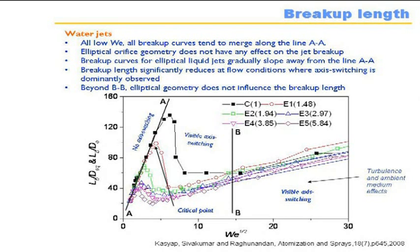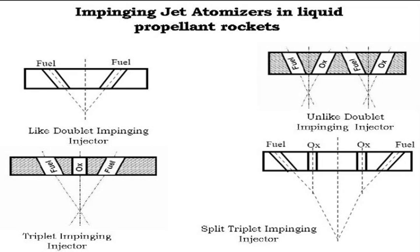In rocket propulsion — another aerospace device — impinging jets are very common in liquid propellant rockets. You have a variety of impinging jets: depending on the type of application, you may have what is called a doublet, a like doublet, an unlike doublet, triplets, or split triplets. All of them exist in practice in different applications. We are trying to see all of them and understand how they behave. This is a subject that has been studied for long by many people.